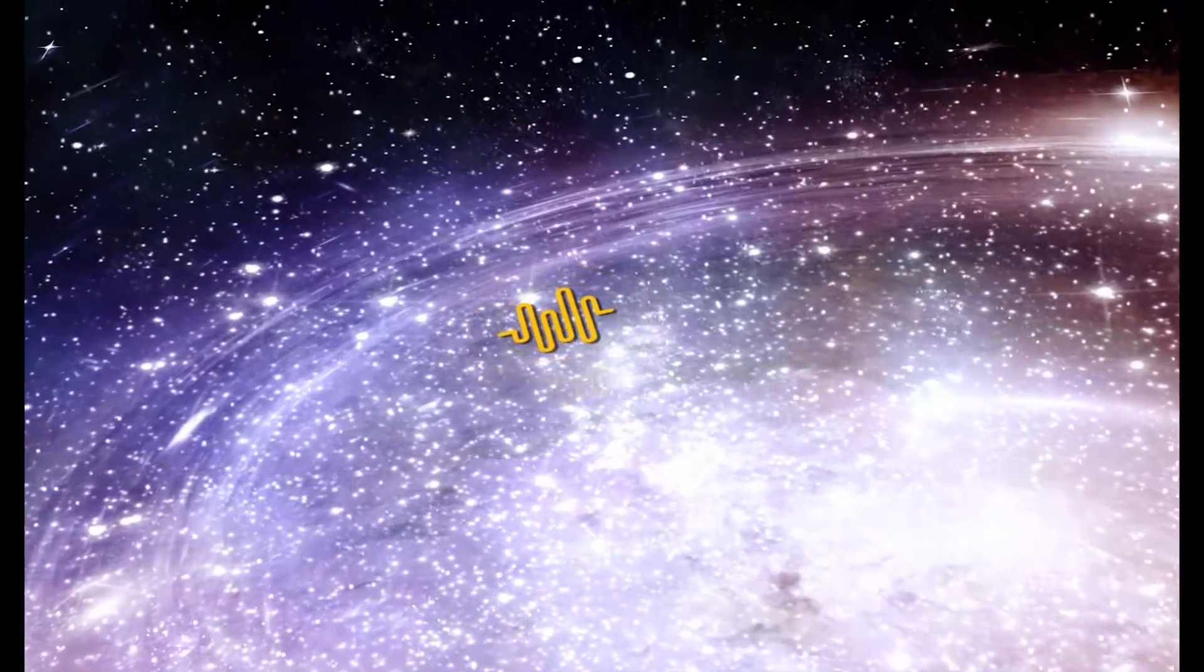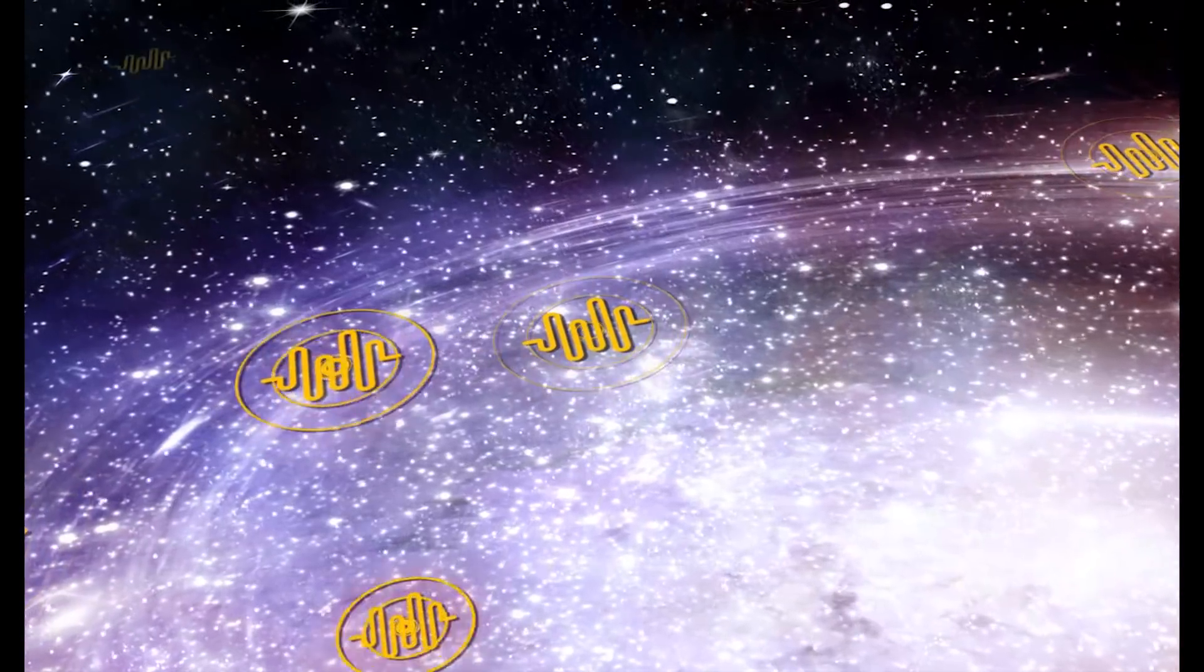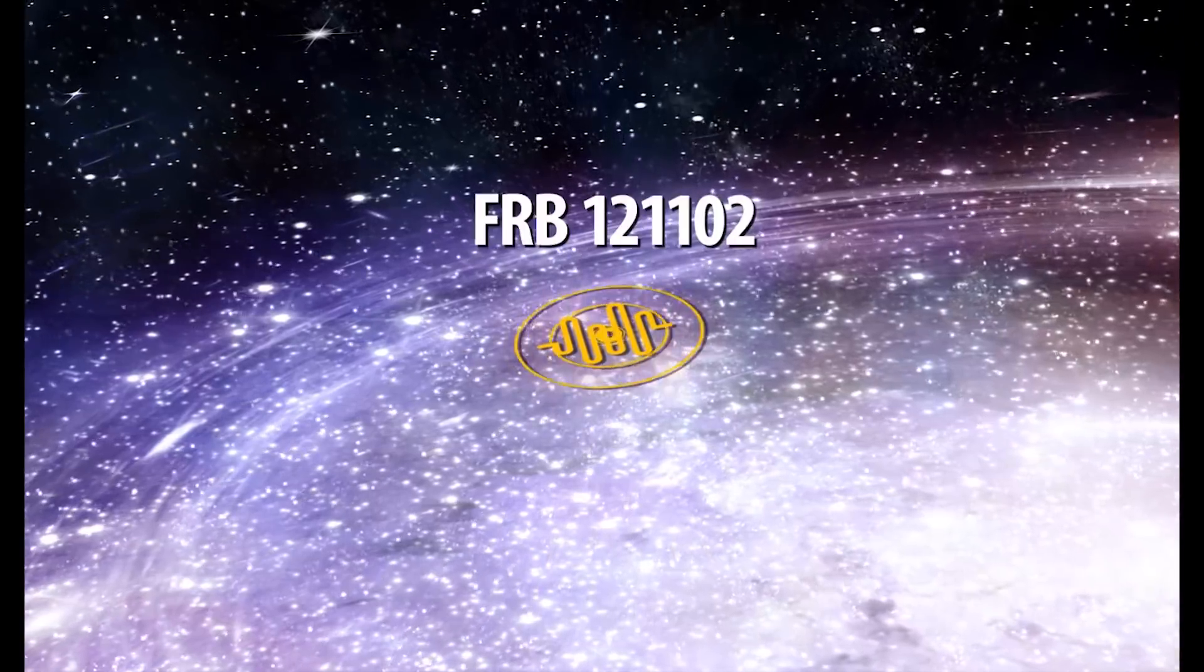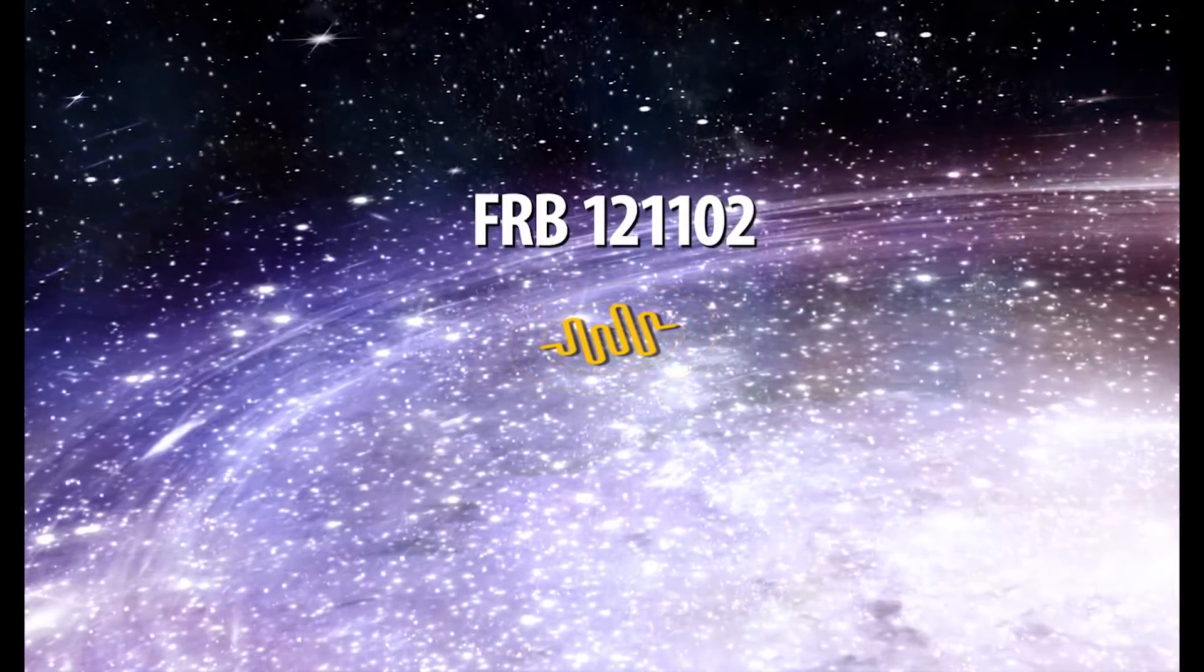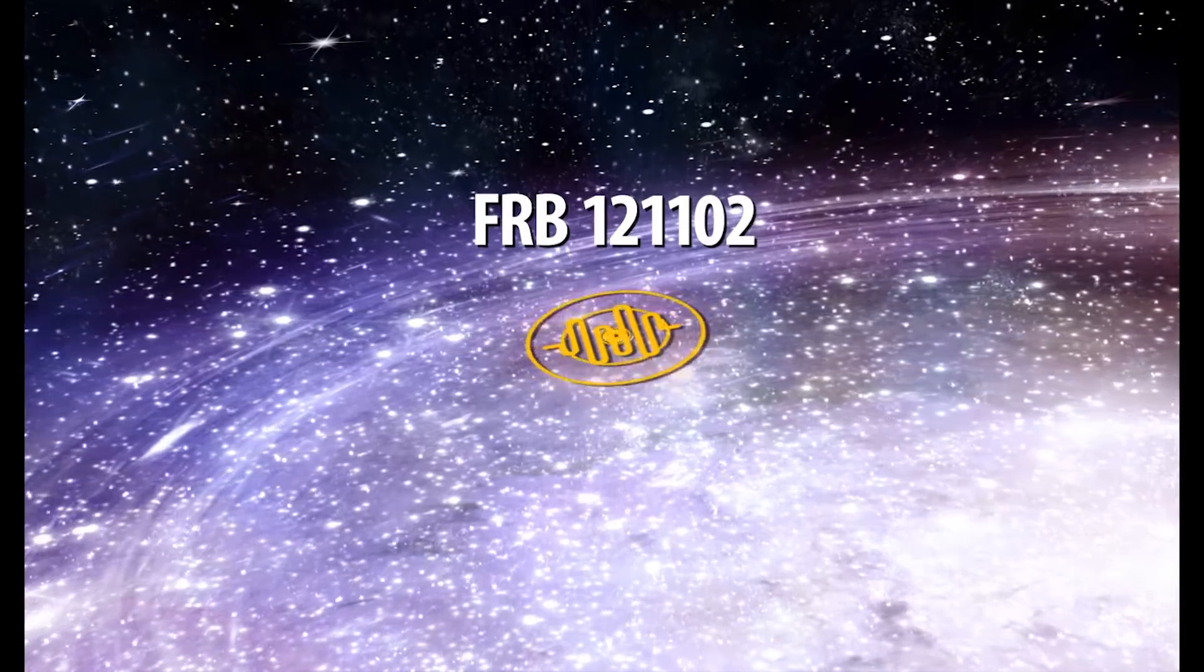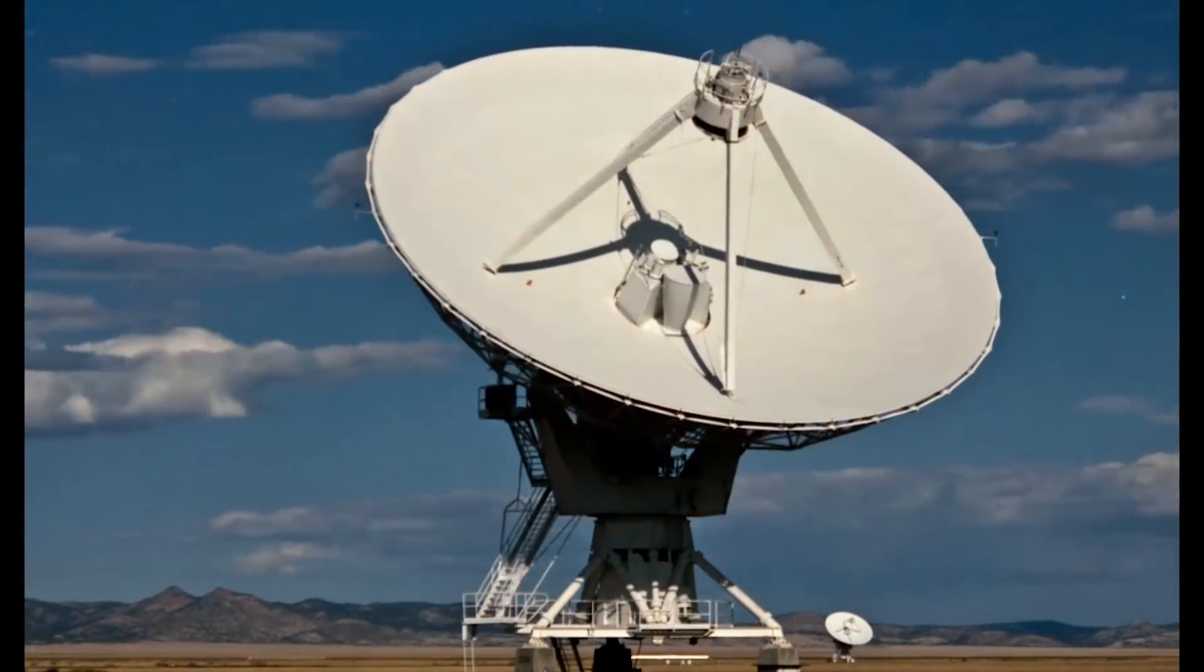They also come at random, so it's really hard to study them. But there is one exception. Out of the 30 known fast radio bursts, one keeps flashing again and again, and its name is FRB-121-102. Man, they should think of a nickname for this thing. Why did this exact radio burst mystify the scientists?